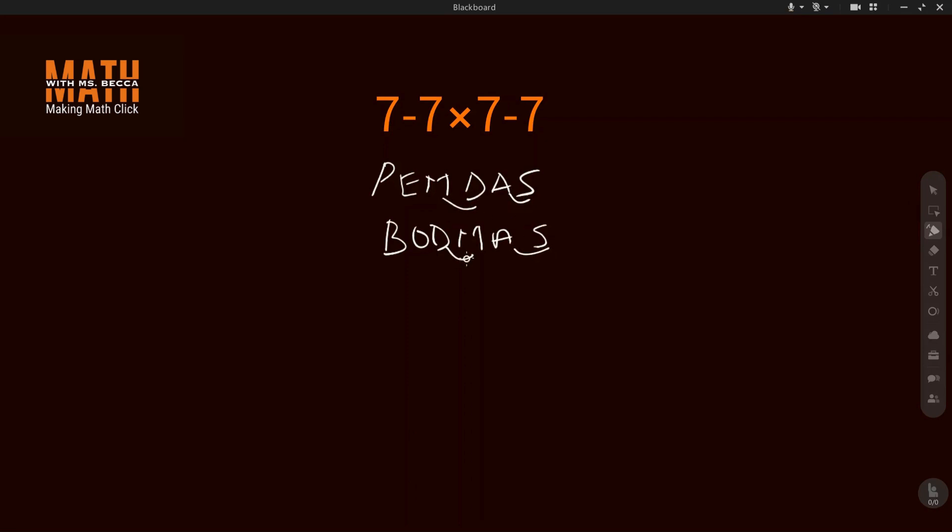Multiplication and division are being solved in the order they appear. Addition and subtraction are also being solved in the order they appear. And if you look at this now you see that we have subtraction and multiplication.